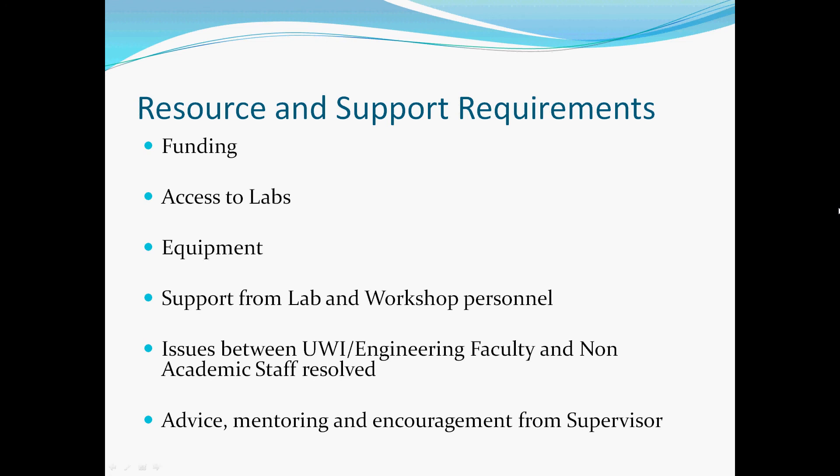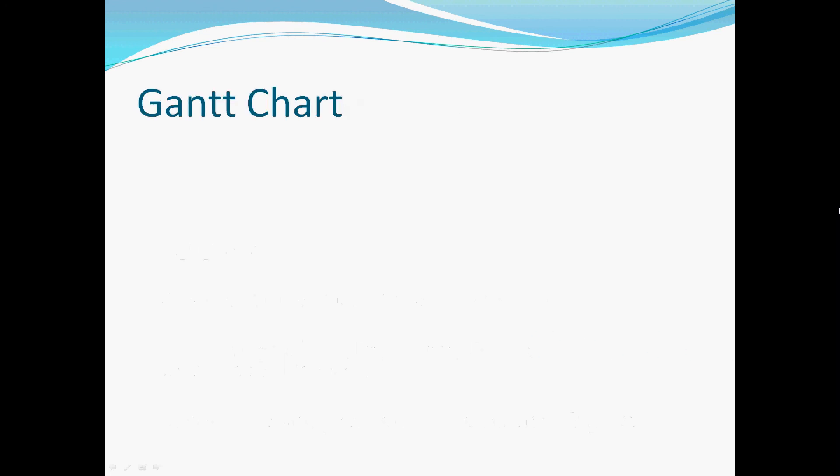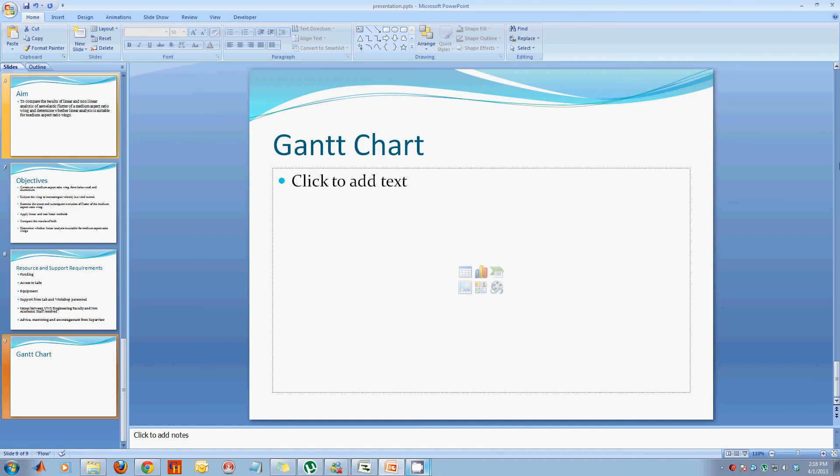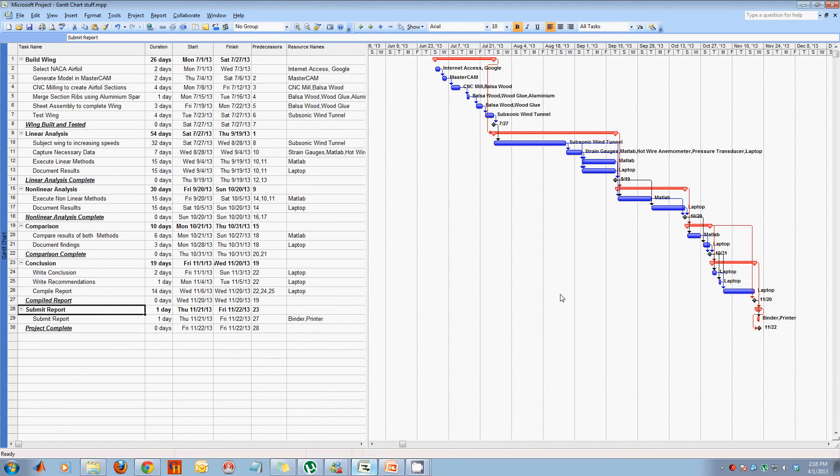I now like to show the Gantt chart which was created in Microsoft Project. To the left we have the tasks together with the durations as well as a list of resources required for each task. And then to the right we have a graphical representation of all of the tasks.